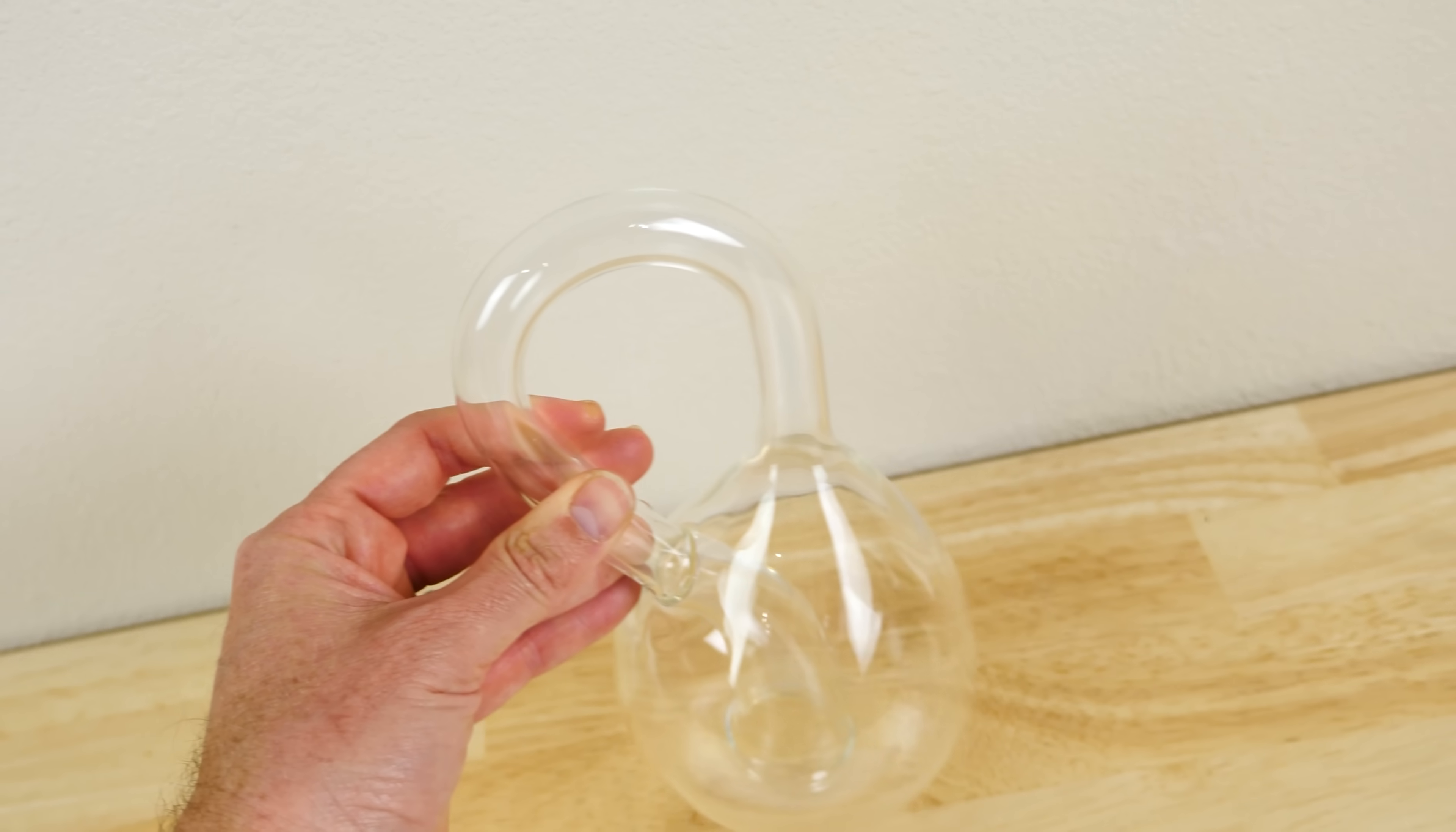The Klein bottle was first imagined by a mathematician named Felix Klein, who wondered what would happen if you take two Mobius strips and sew them together on the edges. The result is a Klein bottle.